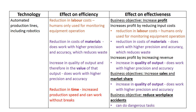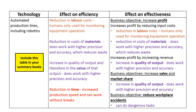Our second learning intention requires you to propose and justify technology strategies as ways of improving the efficiency and effectiveness of operations. To do this, you must be able to specifically relate the use of automated production lines and robotics separately to efficiency and effectiveness. Please include this table in your summary books, together with notes from the discussion which follows.